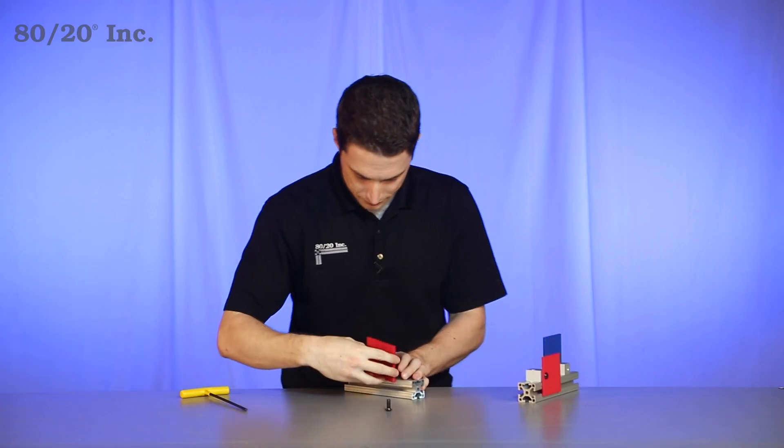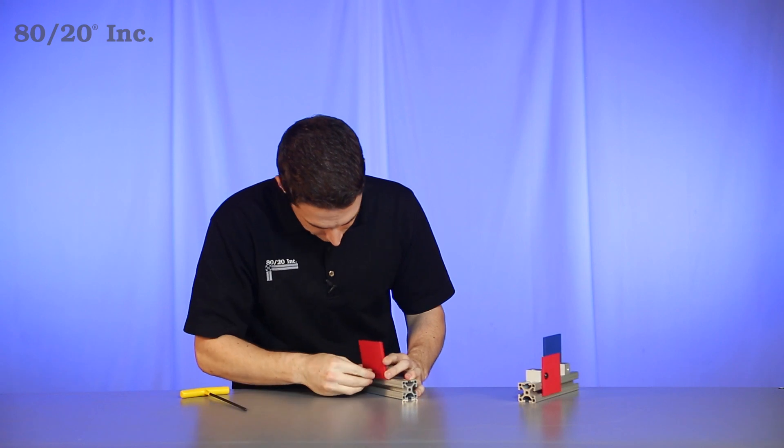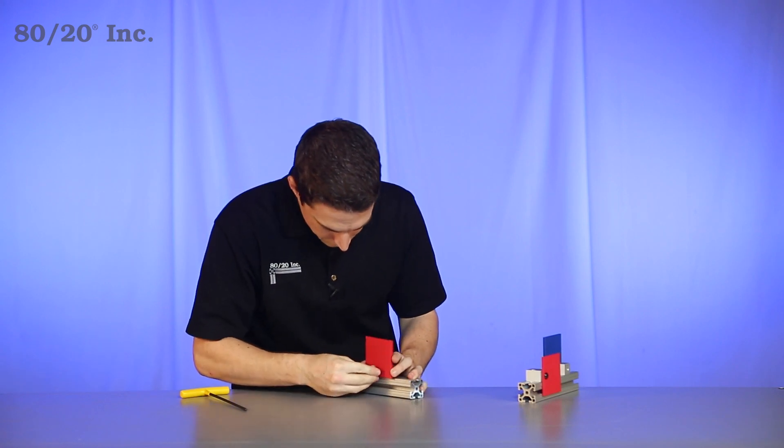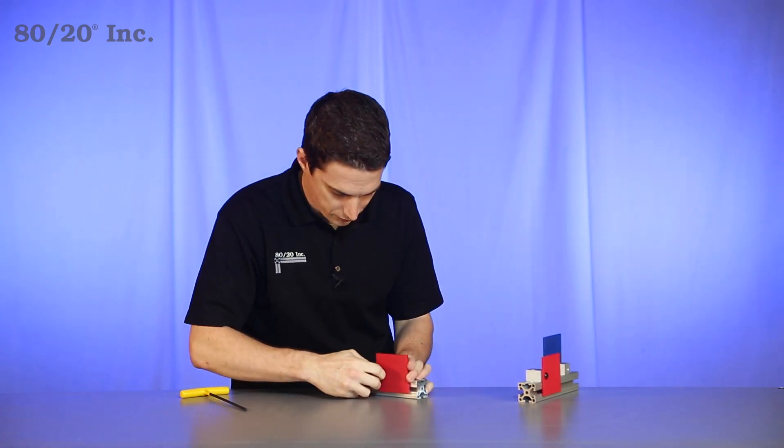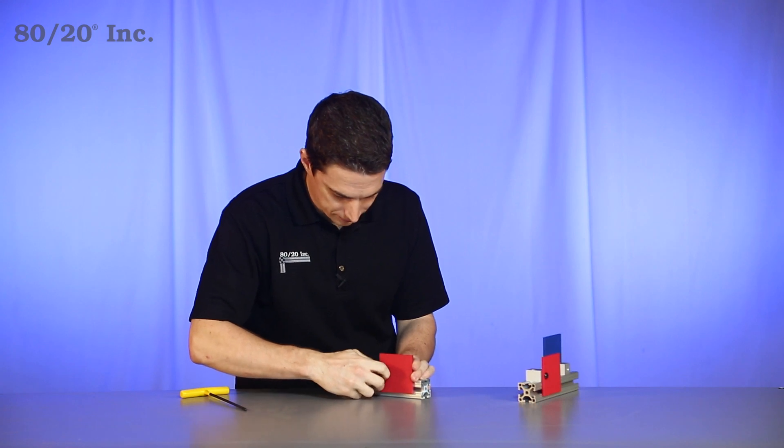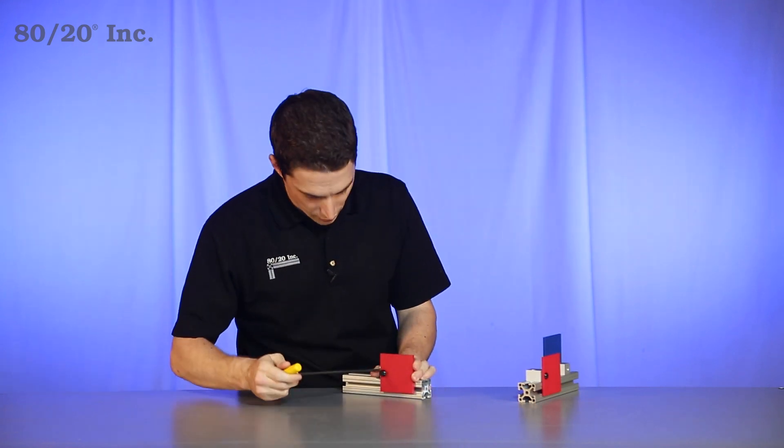From there we'll take our panel, line it up with our block, and feed the bolt through. We'll go ahead and hand tighten that down, and then we'll finish it off with our wrench.